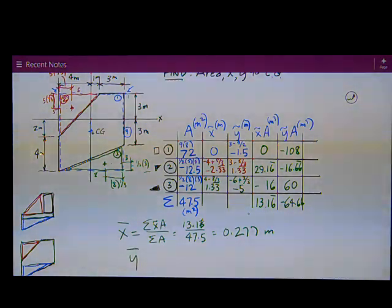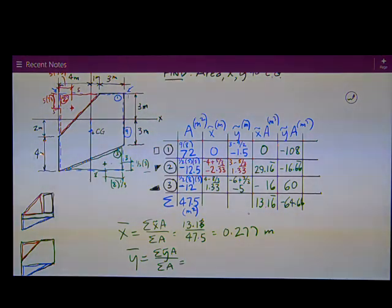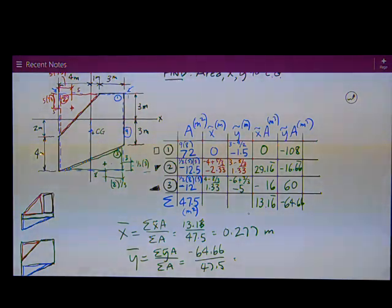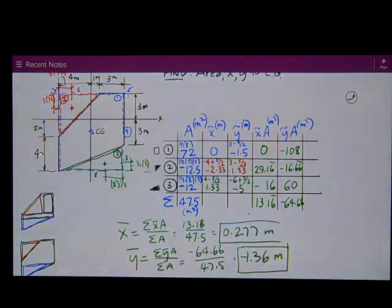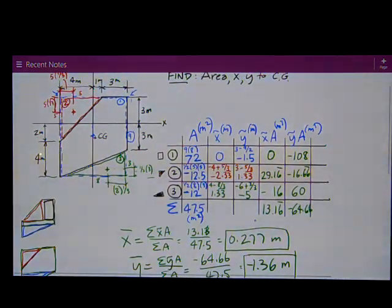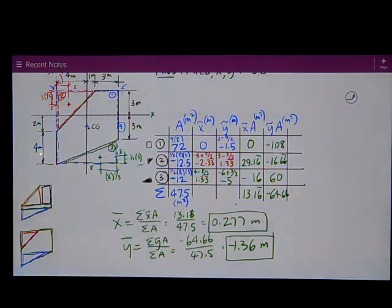Then I've got y bar A, y bar is equal to the sum of the y tilde A's divided by the sum of the areas, and I've got negative 64.66 divided by 47.5. Check my work, and I come up with 1.36 meters, negative 1.36 meters. So those are the two answers. I always want to filter these through my common sense to kind of plot these values. I've got in the x direction positive 0.277. In the y direction I have negative 1.36, something like right about there.